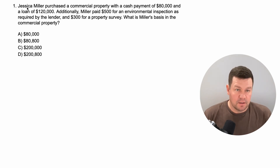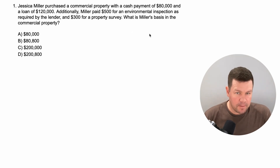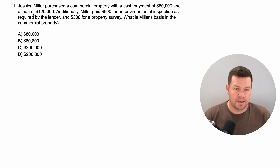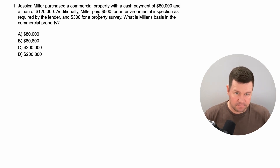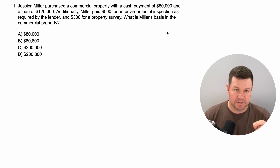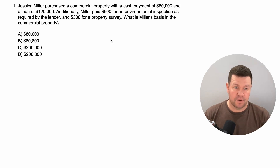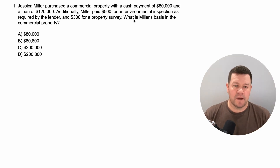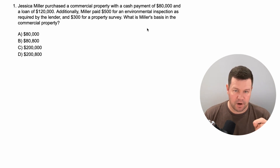So getting started. Jessica purchased a commercial property with a cash payment of $80,000 and a loan of $120,000. Additionally, she paid $500 for an environmental inspection as required by the lender, and $300 for a property survey. What is Jessica's basis in the commercial property?